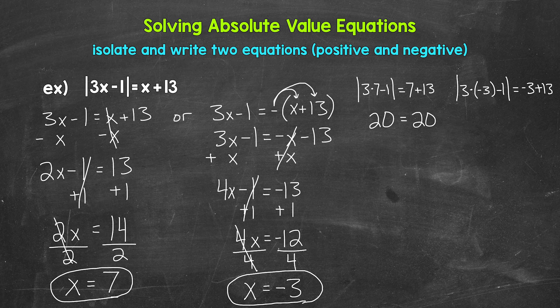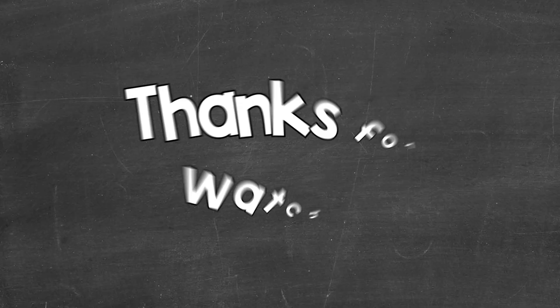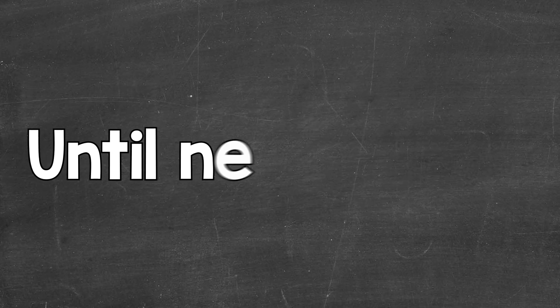For negative 3: the absolute value of 3 times negative 3 minus 1 equals negative 3 plus 13. 3 times negative 3 is negative 9, minus 1 gives us negative 10. The absolute value of negative 10 is 10. On the right side, negative 3 plus 13 equals 10 as well. So we have 10 equals 10, which is true. X equals negative 3 is correct. So our two solutions are 7 and negative 3. There's how to solve an absolute value equation with variables on both sides. I hope that helped. Thanks so much for watching — until next time!